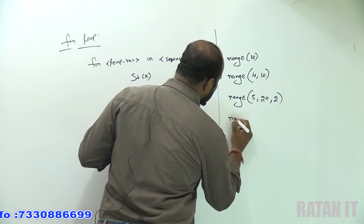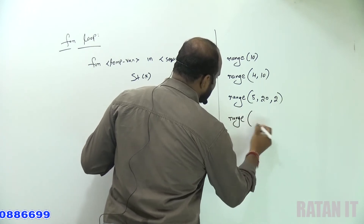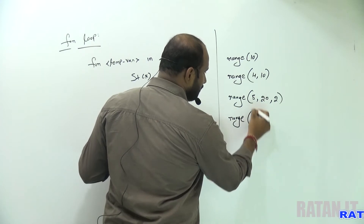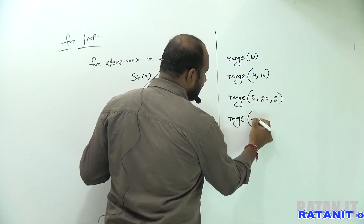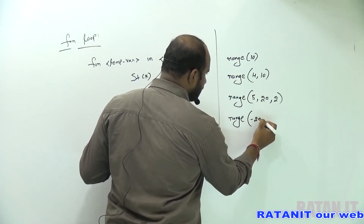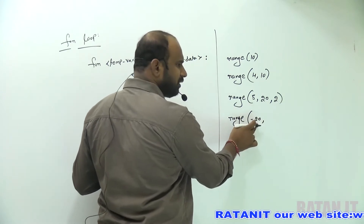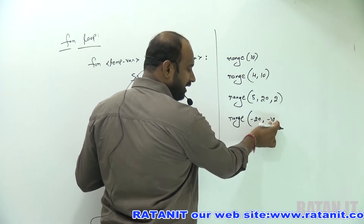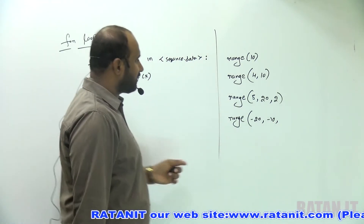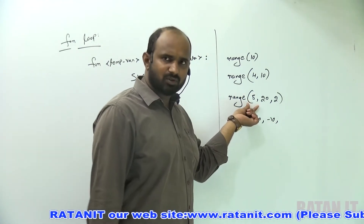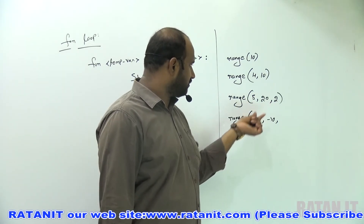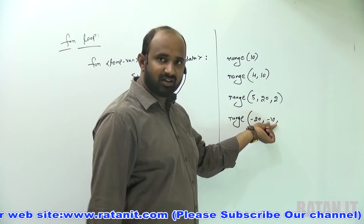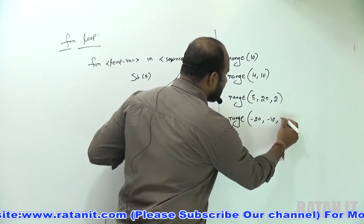You can also specify negative values in range. For example, range of minus 20 to minus 10: minus 20 is the lower value and minus 10 is the higher value. Just like positive values where 5 is the lower and 20 is the bigger, with negatives minus 20 is lower and minus 10 is higher. You can also set increment by 3.